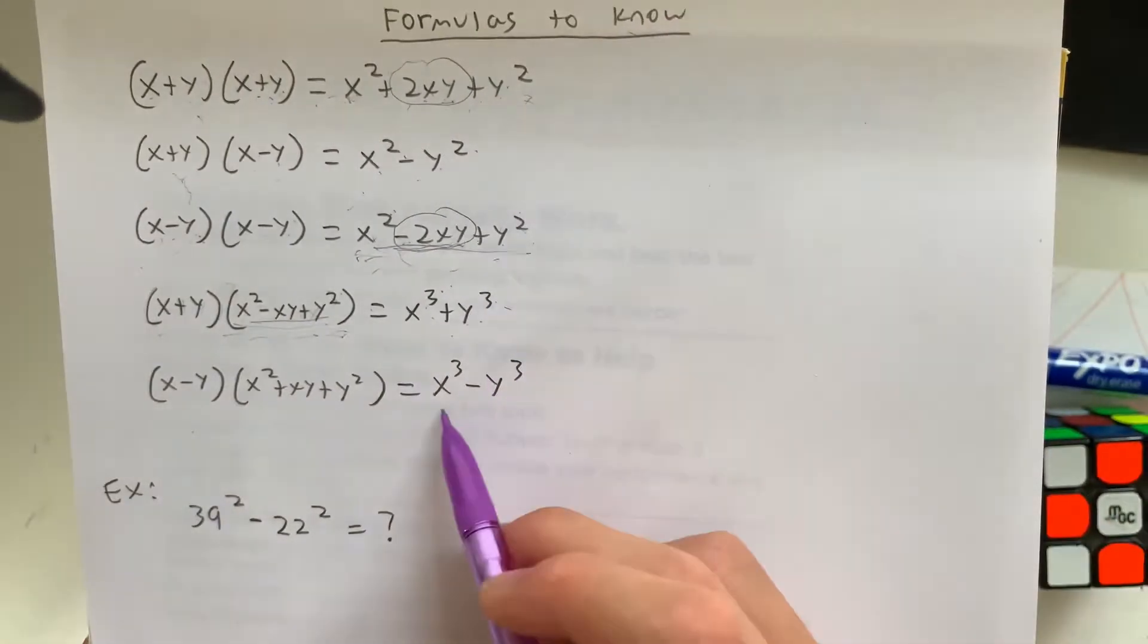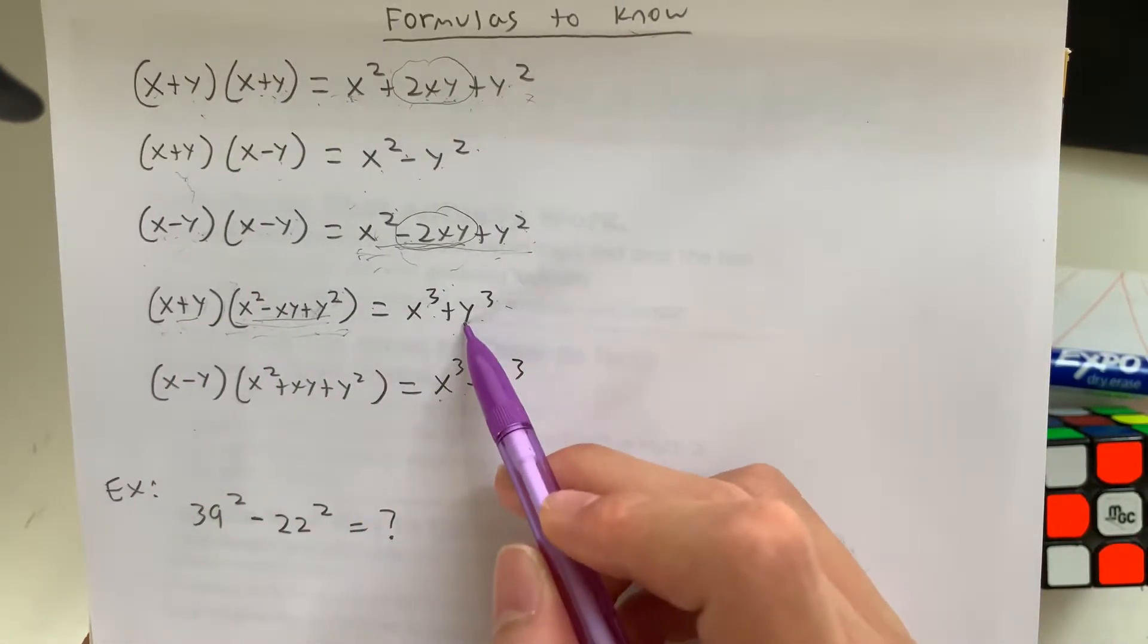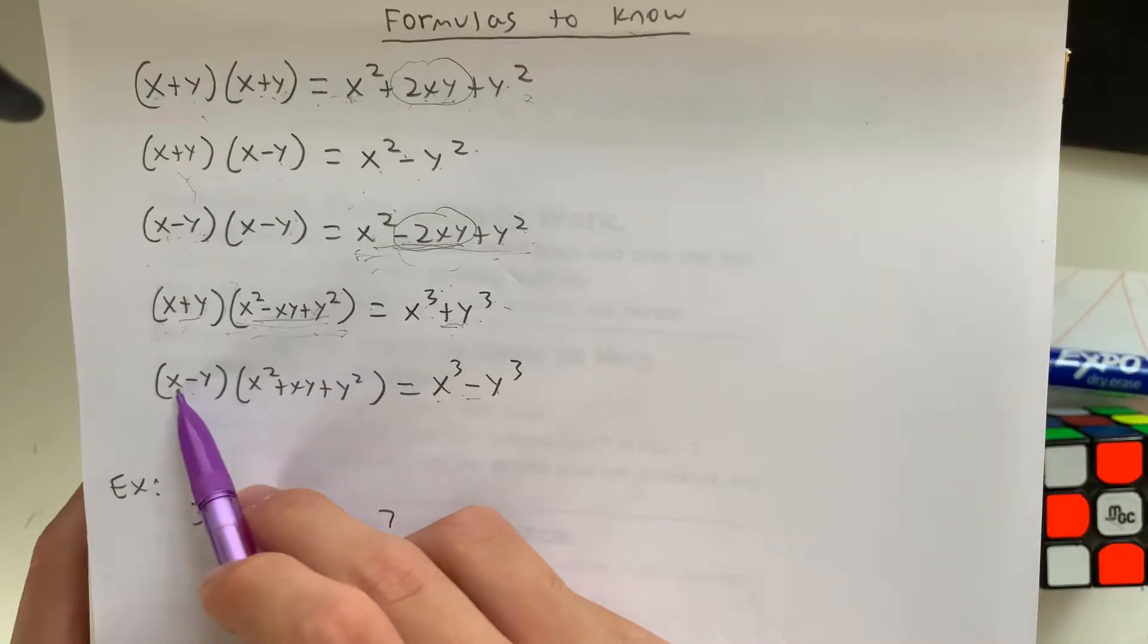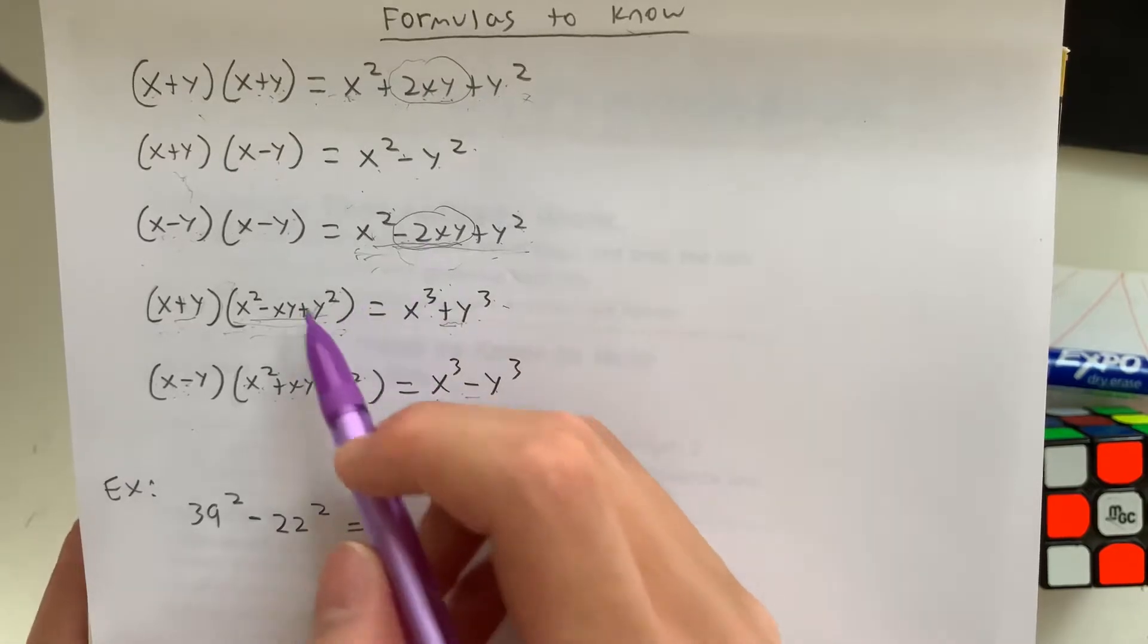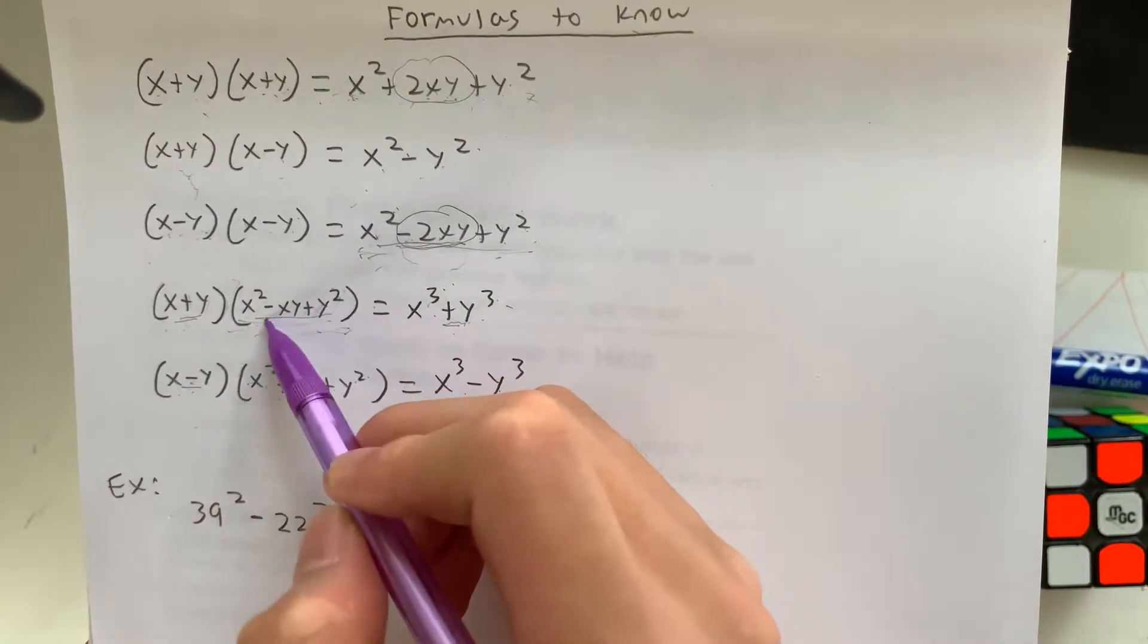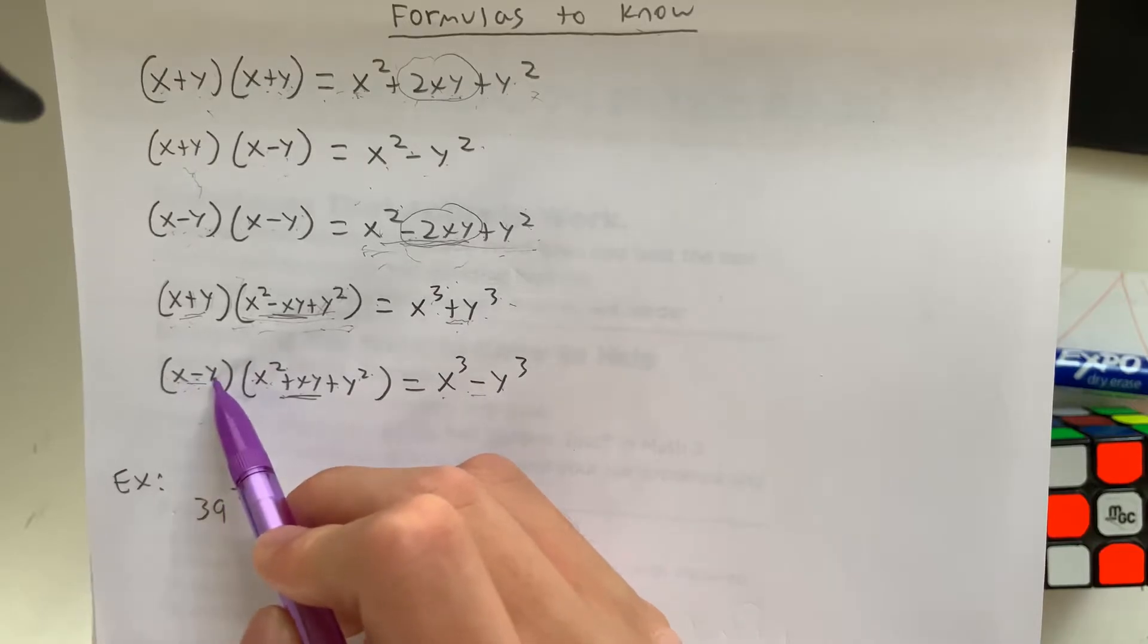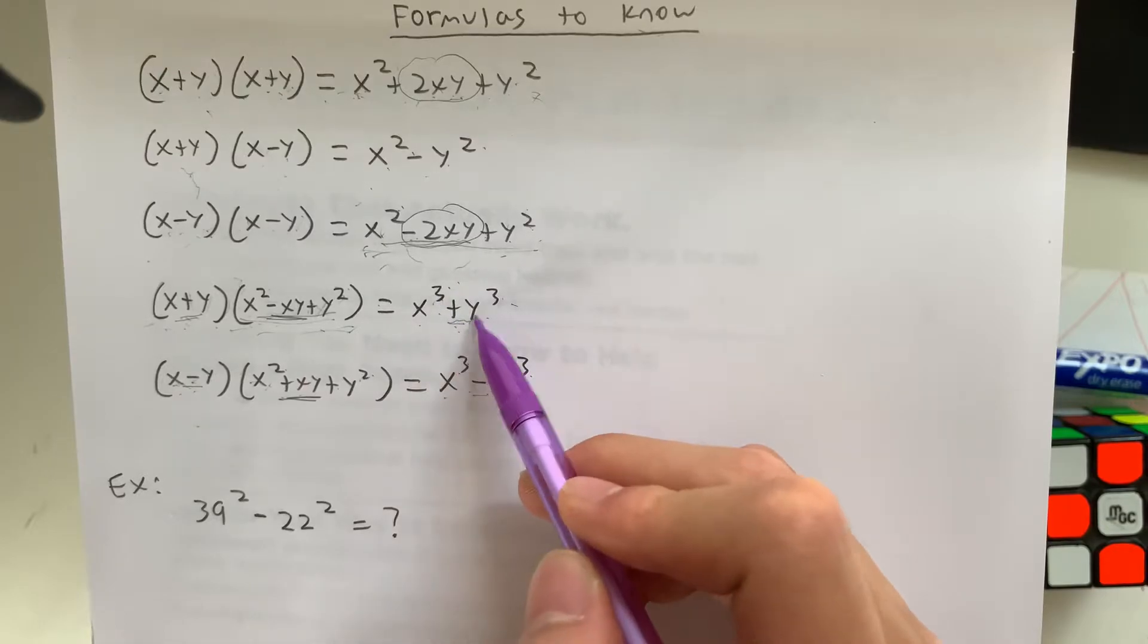Next we have the difference of cubes. So instead of having an addition sign here, you have a subtraction sign. This means x minus y times x squared plus xy plus y squared. The sign here is the difference and the sign here is also the difference. So x minus y is x cubed minus y cubed, x plus y is x cubed plus y cubed.